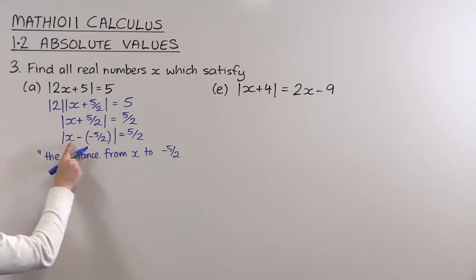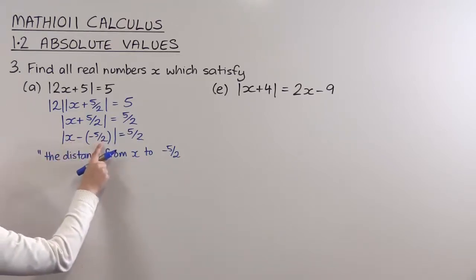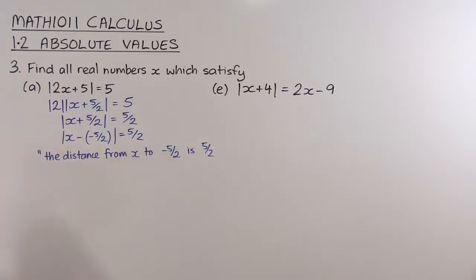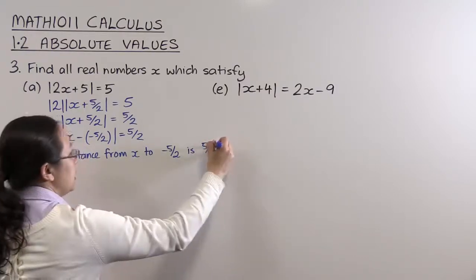The reason I want to do that is because this reads the distance from x to minus 5/2, and it only reads that when that's a subtraction in there. So the distance from x to minus 5/2 is equal to 5/2. That's what that equation is saying. So that's how we're going to solve this equation by thinking of it as a distance.